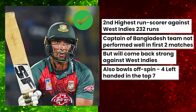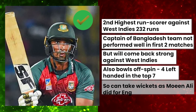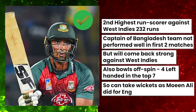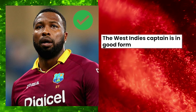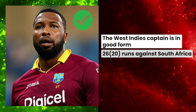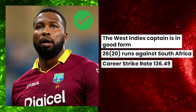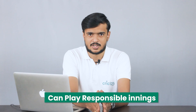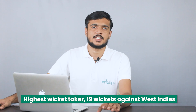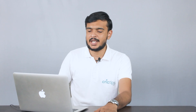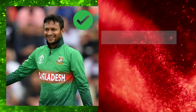The third batsman will be from Bangladesh: Mohammad Naim, who scored 62 runs off just 52 balls against Sri Lanka. In a short career of 26 T20 internationals, this player has scored 701 runs with an impressive average and strike rate. The fourth batsman is Bangladesh skipper Mohammad Dullah, the second highest run scorer from Bangladesh against West Indies with 232 runs in his career. He also bowls off spin and, given that there are 4 left-handed batsmen in the top 7 of West Indies, Mohammad Dullah can really take wickets in this match.